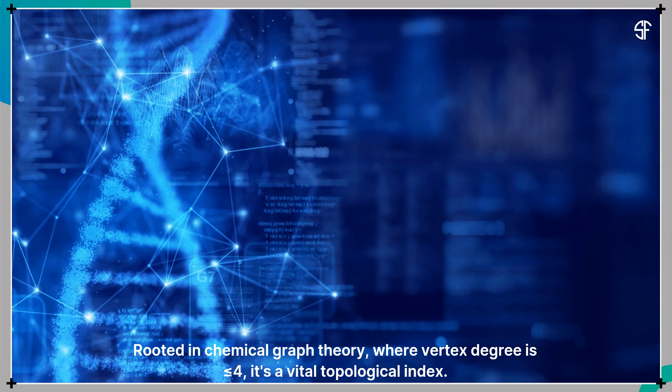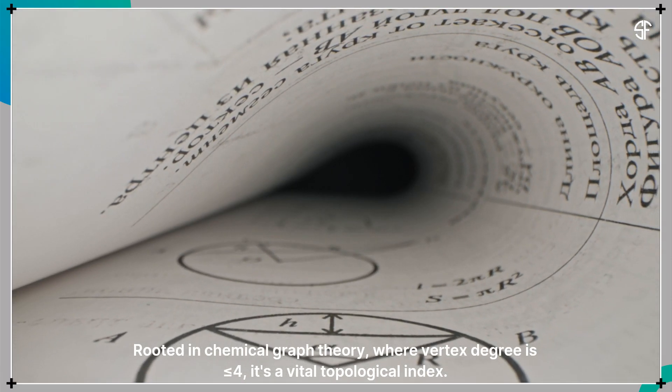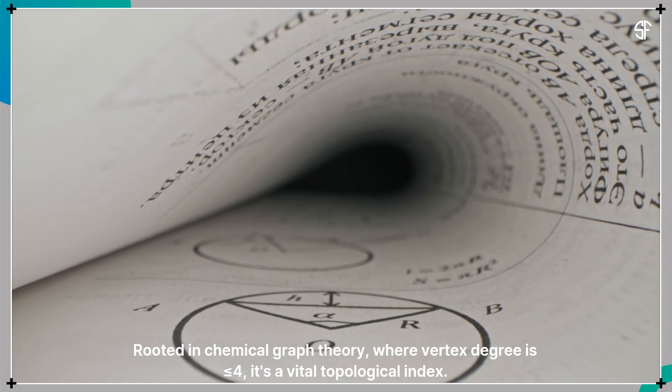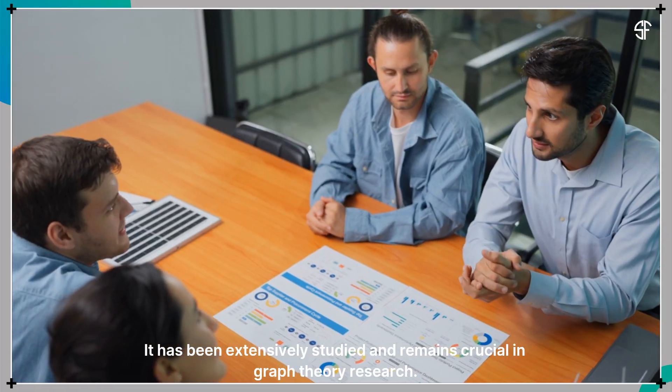Rooted in chemical graph theory, where vertex degree is less than or equal to 4, it's a vital topological index. It has been extensively studied and remains crucial in graph theory research.